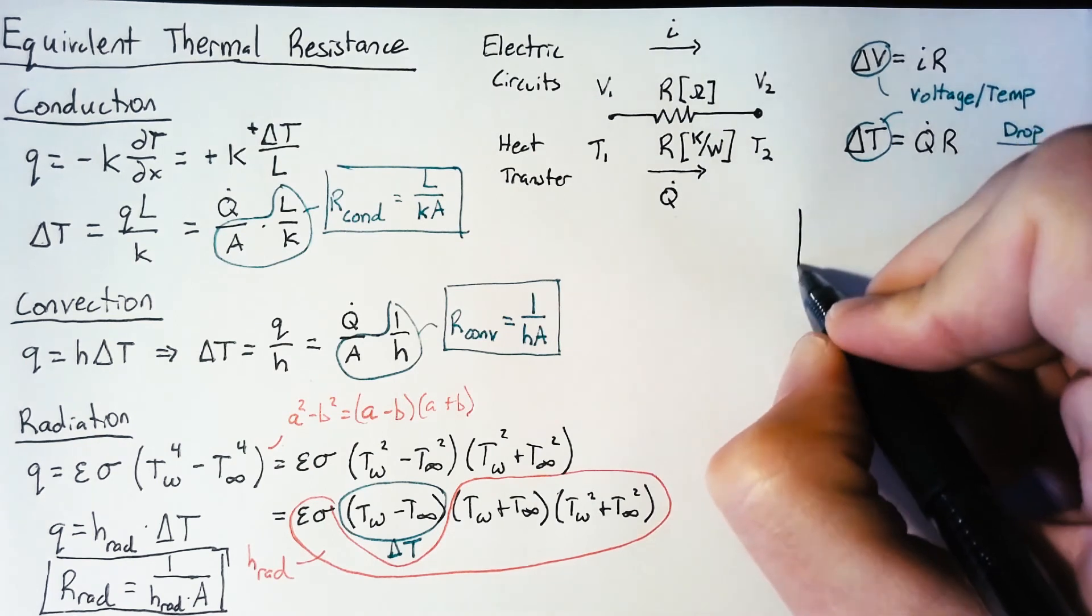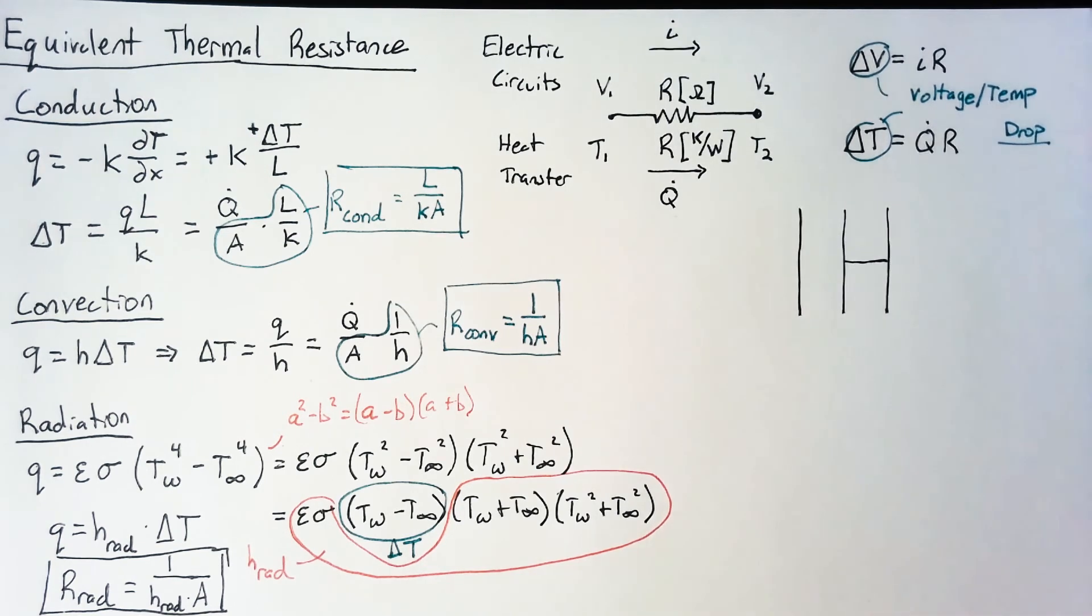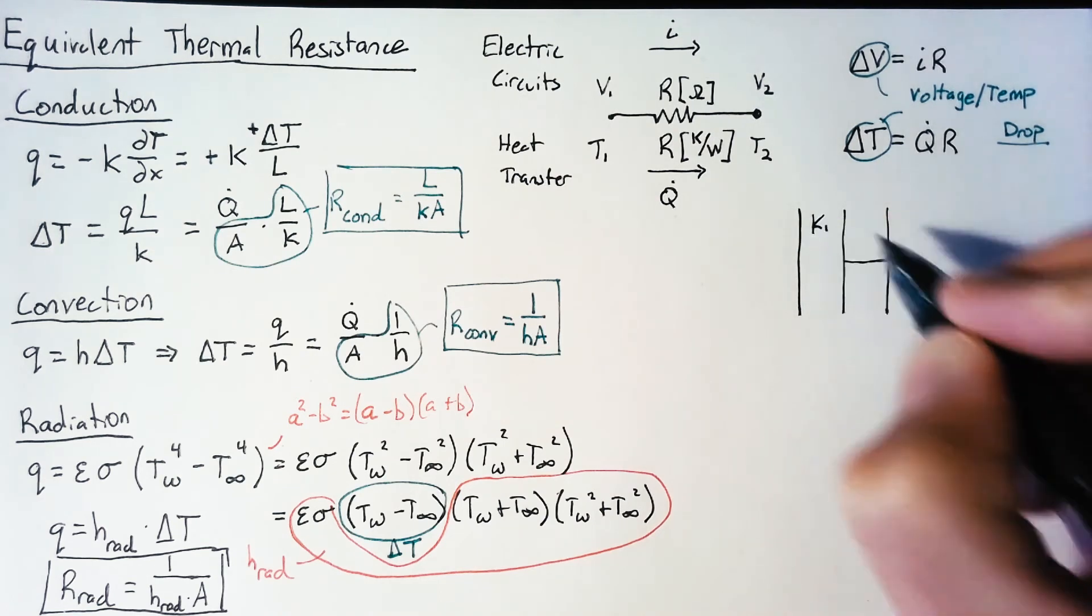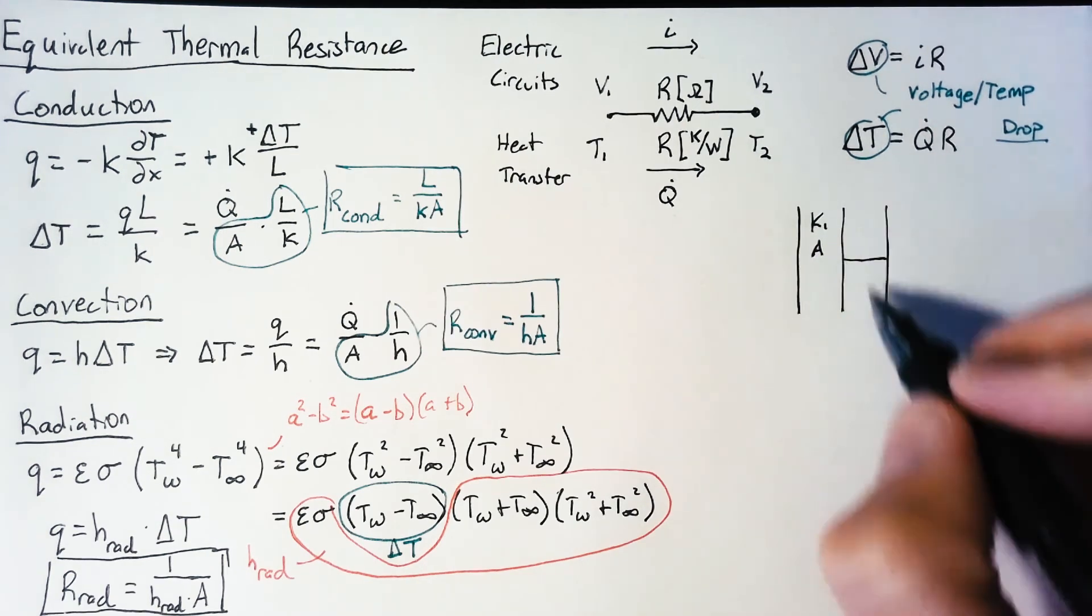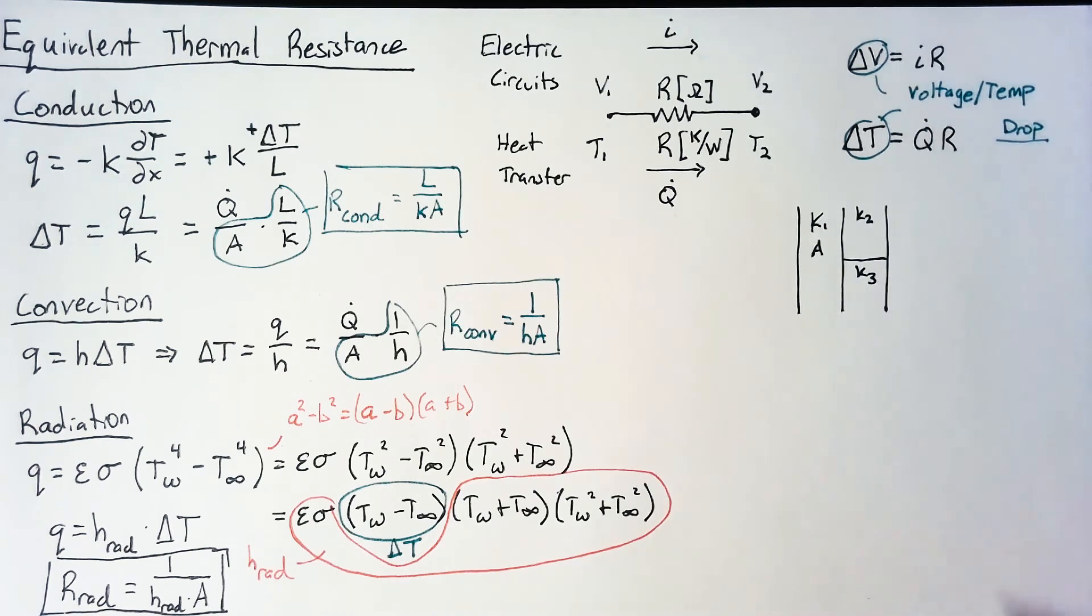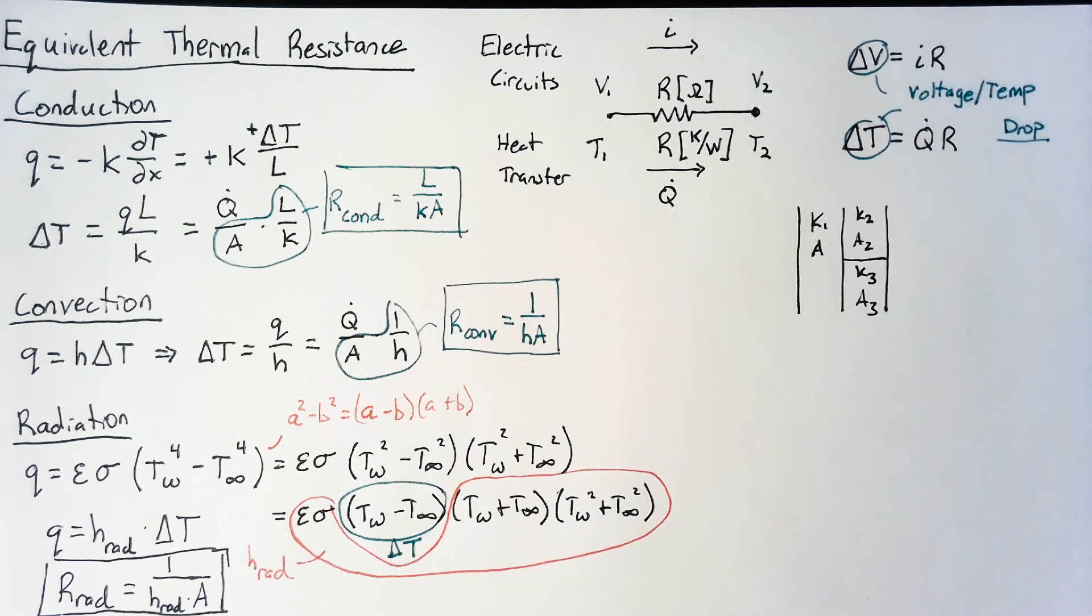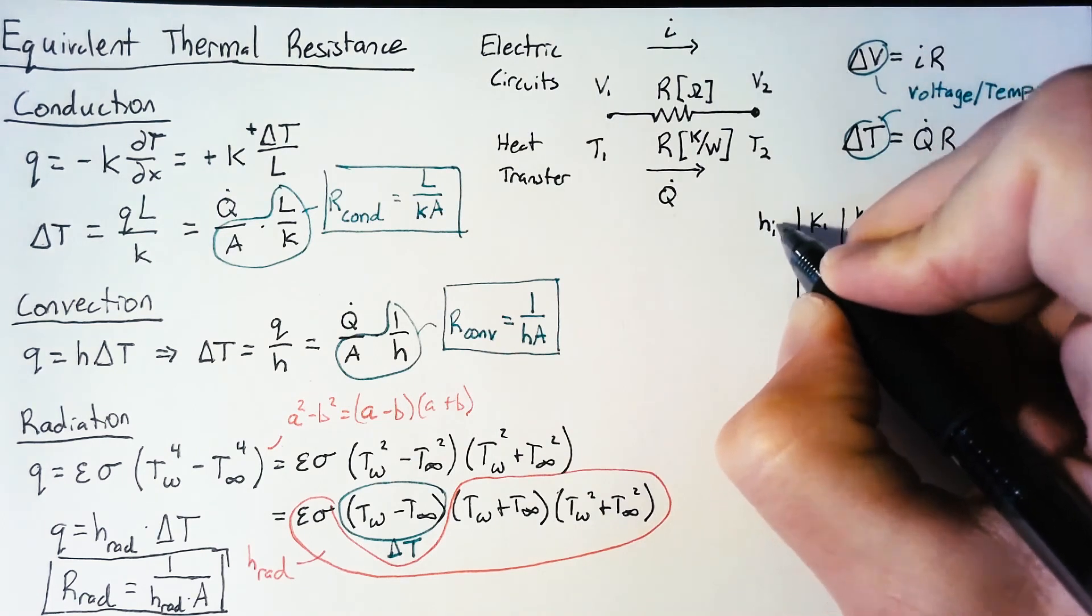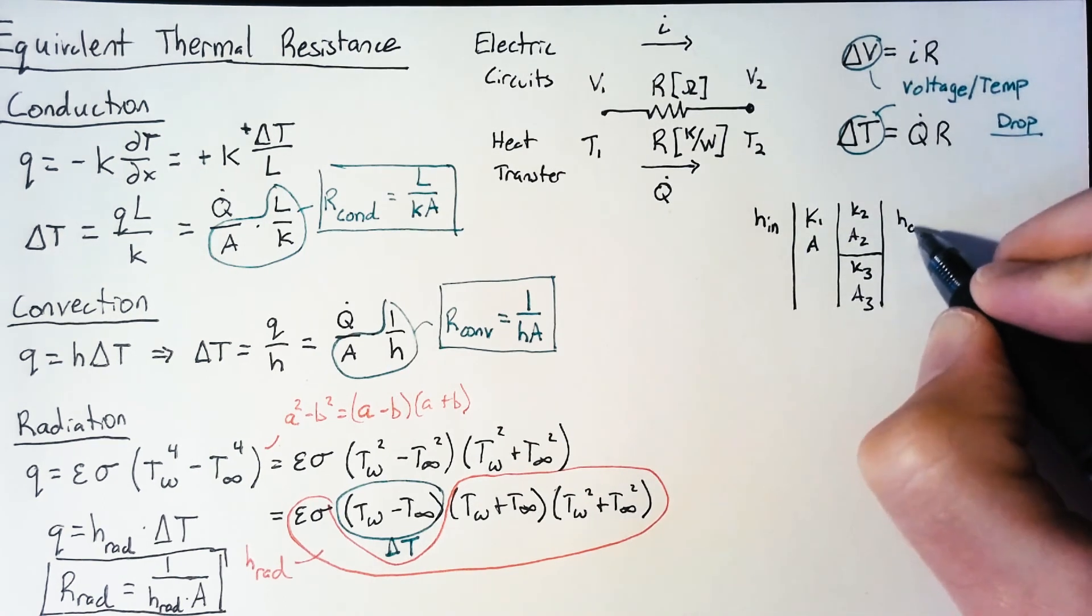So our problem is going to be two regions separated by a composite wall. And this composite wall is composed of one section that just covers the entire area. It's going to have a thermal conductivity K1. Like I said, it covers the entire area, which we can just label A. The second section of wall is split into two pieces with thermal conductivity K2 and K3 and areas A2 and A3. And then A2 and A3, of course, add up to A. And then these are touching different air surfaces, so we can give those some values as well. So I'm going to give that a heat transfer coefficient H in, and then on the outside we'll have H out.